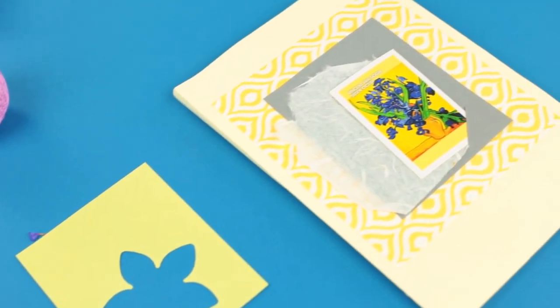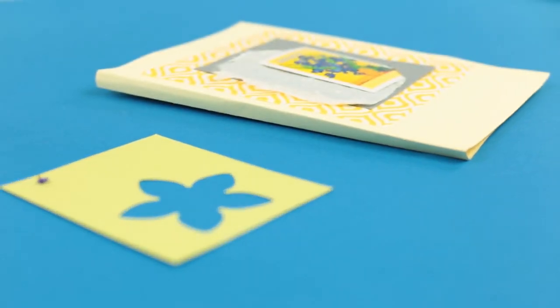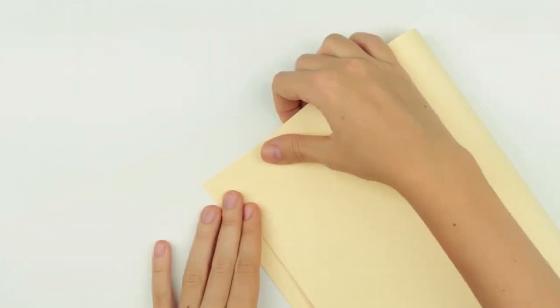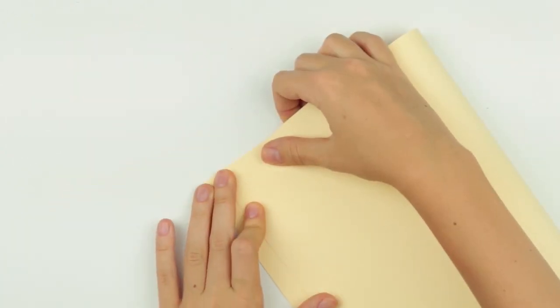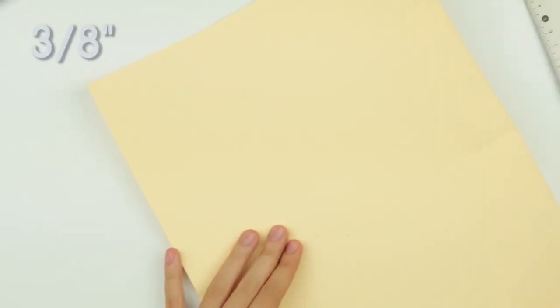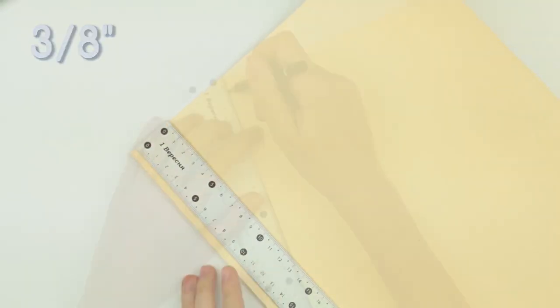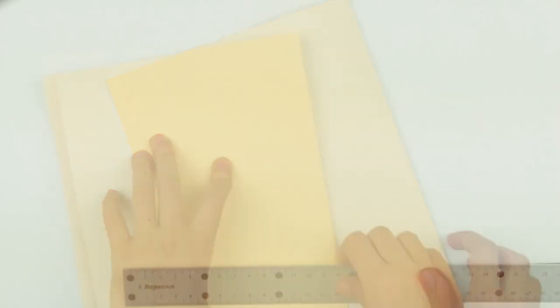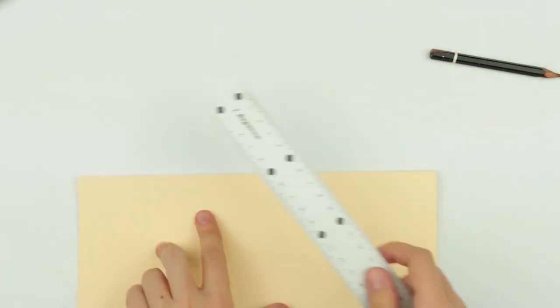In this video we'll show you how to make a scrapbook photo album. Lay A3 cardstock horizontally. Mark 3 1⁄8 inches from the edge. Fold up to the mark. Measure out 3 1⁄8 inches from the other side. Fold in the same way again. Now the scrapbook will open neatly and easily.